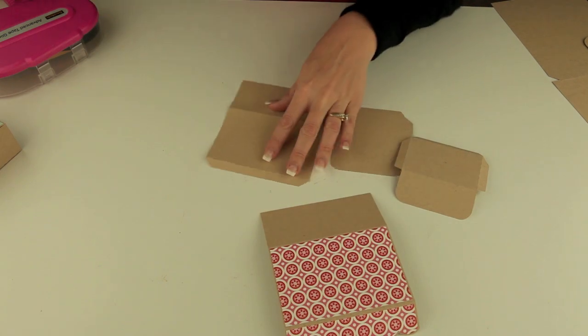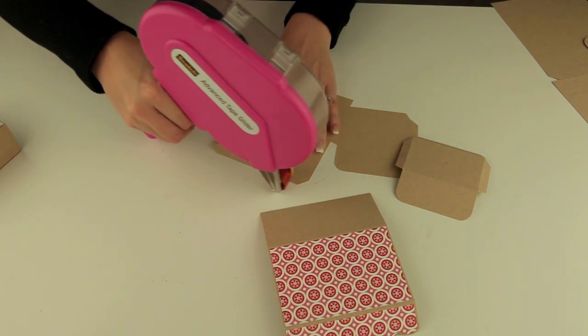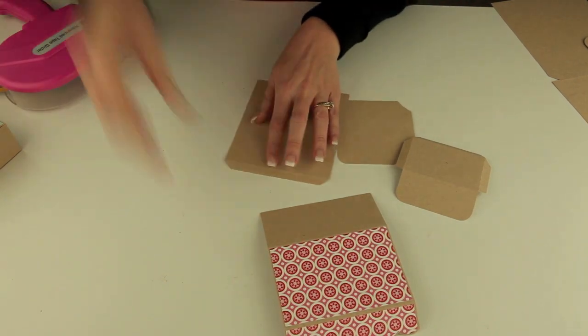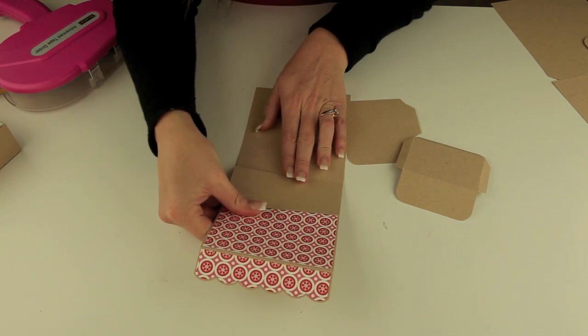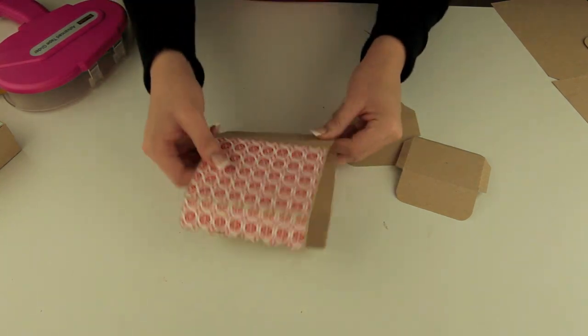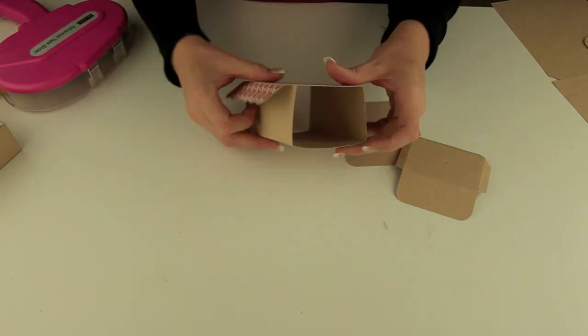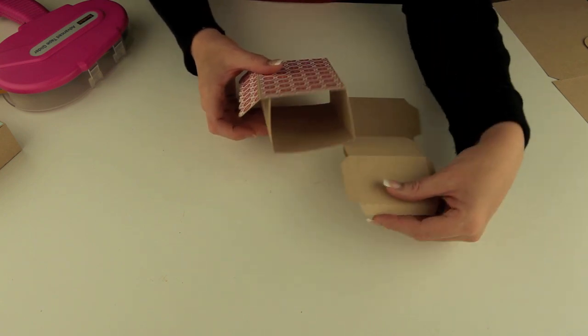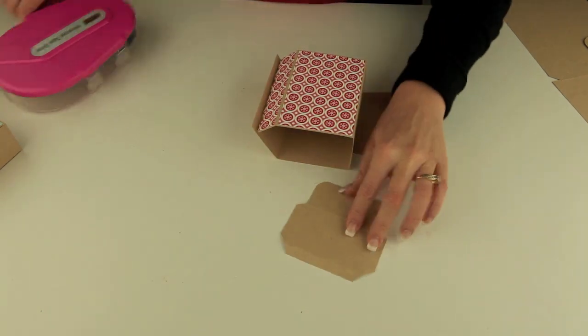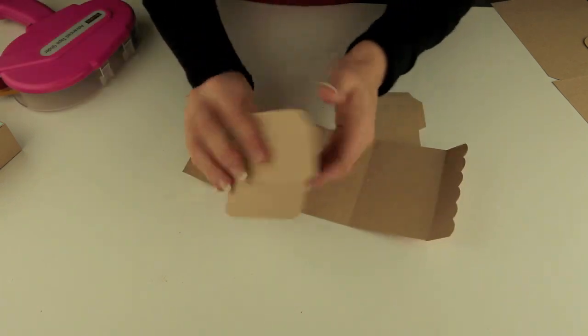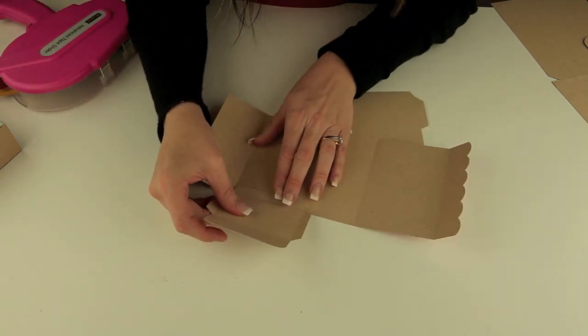Let's go ahead and put some adhesive on this strip right here. We'll glue this in place. Now that that's in place, we need to install the two sides. They look like this. You'll just go ahead and put glue on these three flaps and put them on this side here.